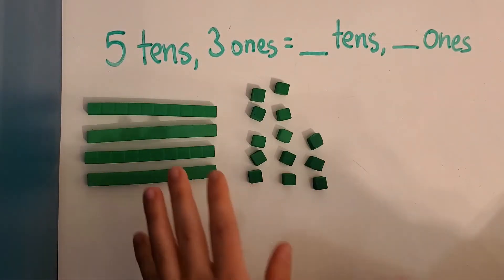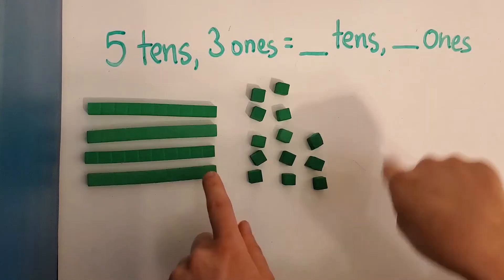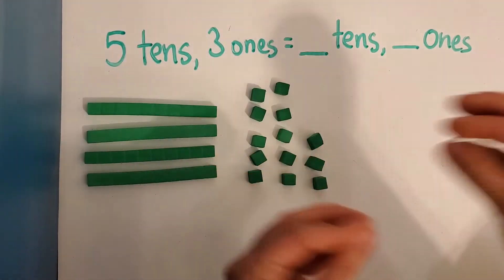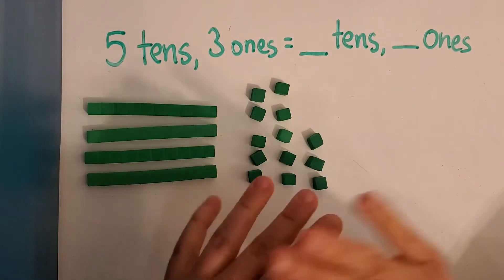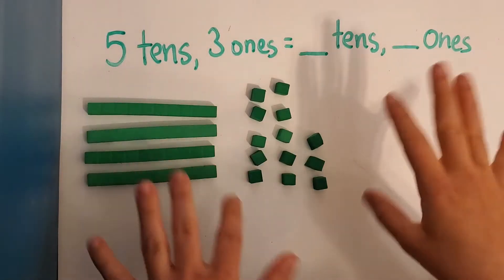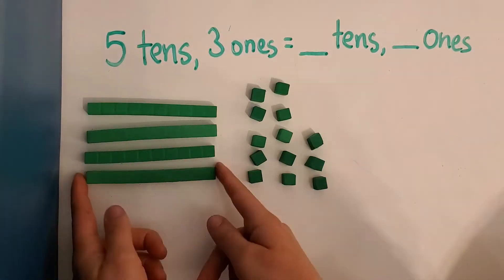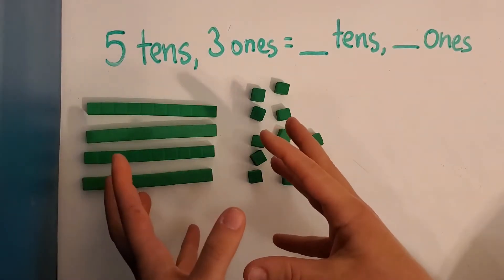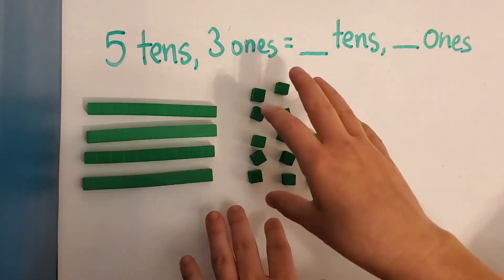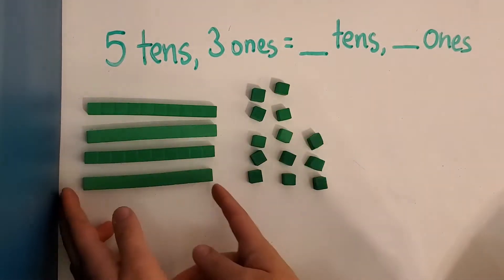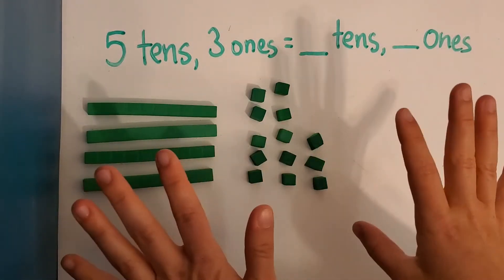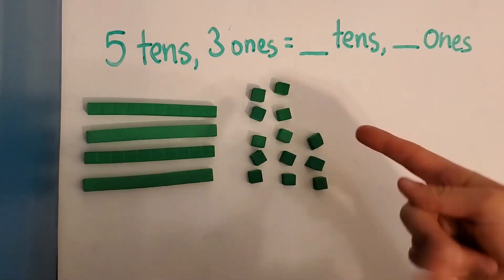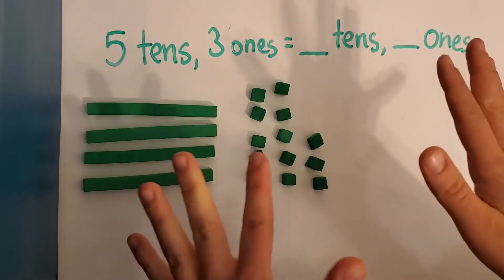Remember how before we were regrouping ones and taking ten ones and then replacing it with one ten rod? Well, we just did it the opposite way. We just took a ten rod and regrouped it and replaced it with ten ones instead. So what we learned before, we're kind of doing it backwards now. We're doing it the opposite.